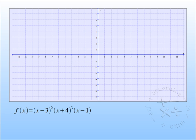In our first example here we have f of x equals x minus 3 quantity squared, x plus 4 quantity cubed times x minus 1. So let's consider the degree and the leading term.